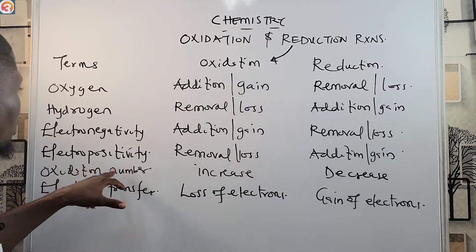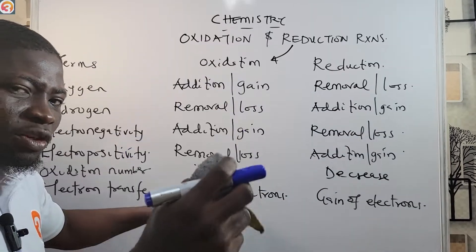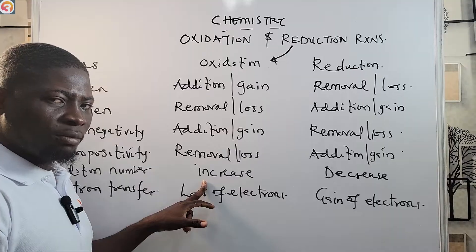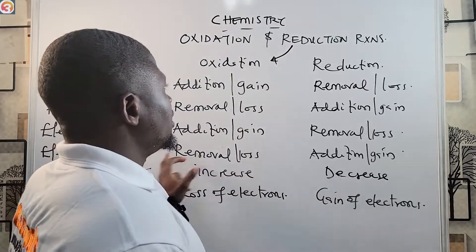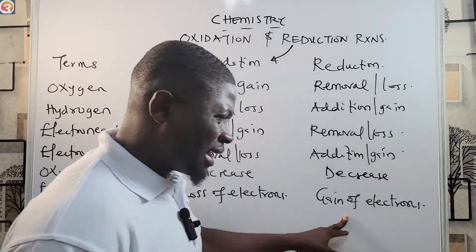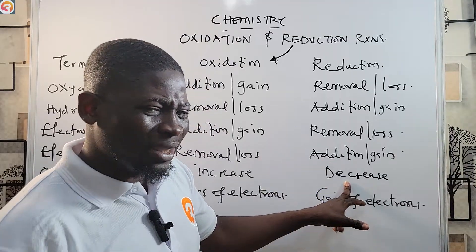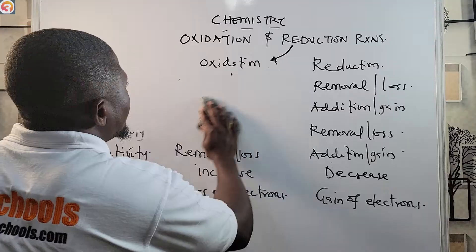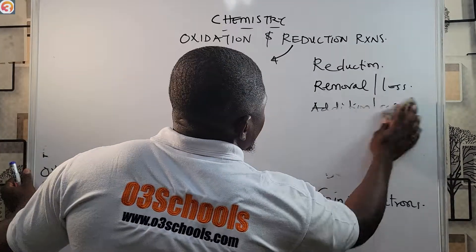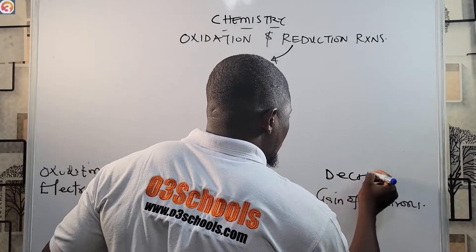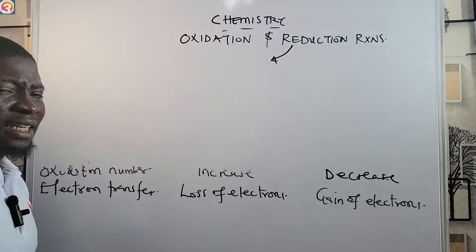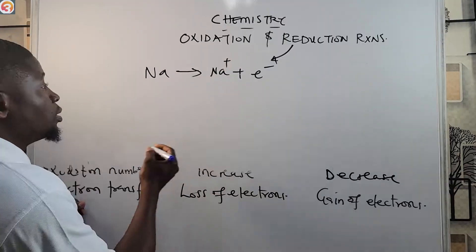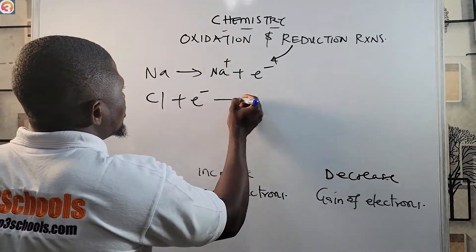Let's look at two atoms together. We have: Na → Na⁺ + e⁻, and Cl + e⁻ → Cl⁻. As you can see, the sodium atom loses one electron to become Na⁺, while the chlorine atom gains one electron to become Cl⁻. Sodium lost the electron; chlorine gained the electron.